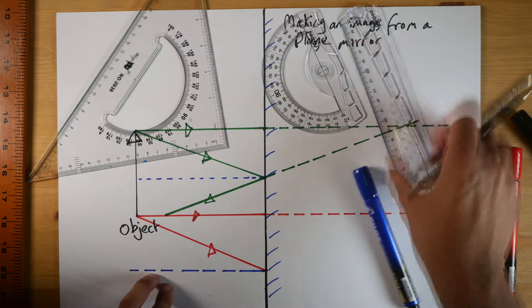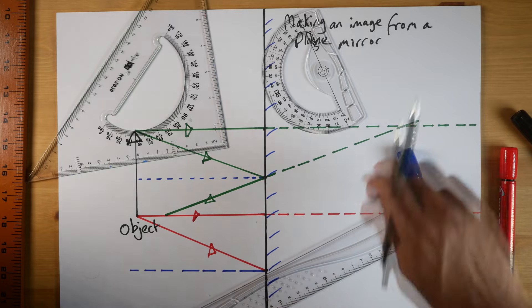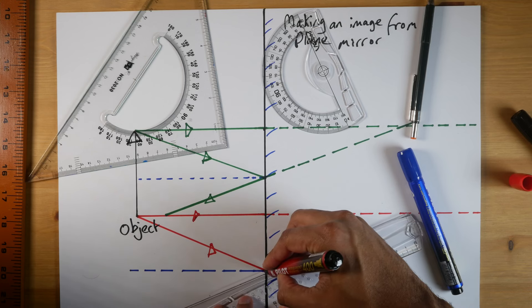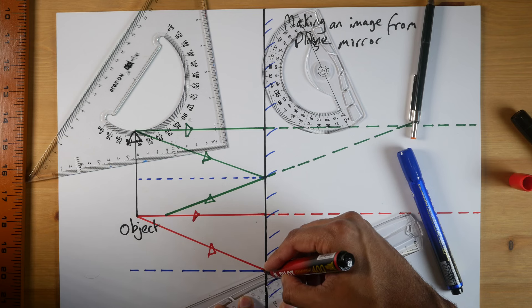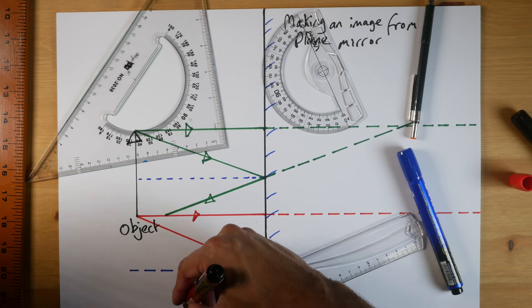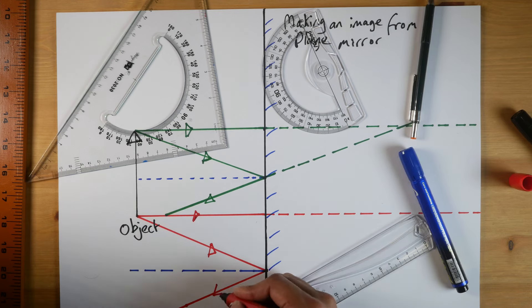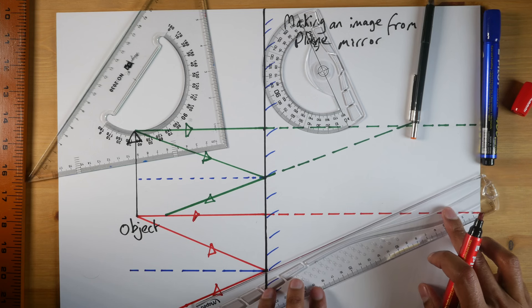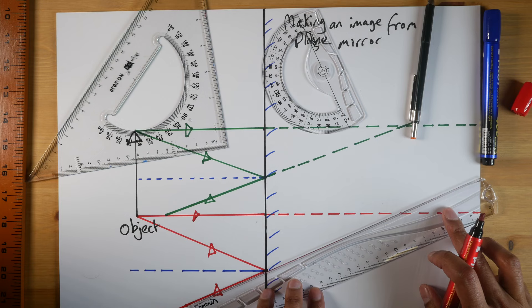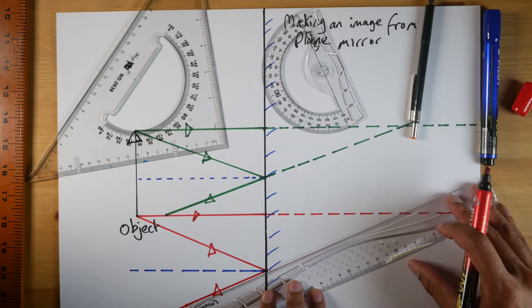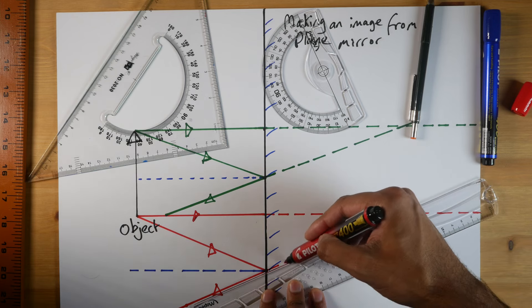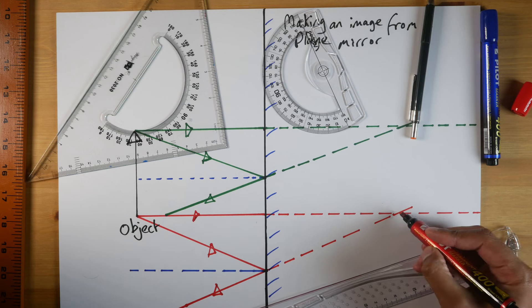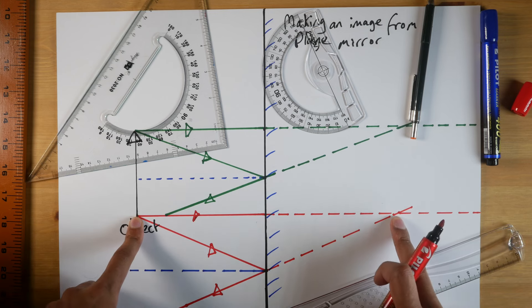And I'm going to use this to make the other line. Kind of running out of paper here, but it is what it is. As accurate as I can. Yeah, we hit it. Cool. Like this. And just like before, what we've got to do is we've got to extend this line backwards. And where the two lines meet, which is just here, that's where that part of the image is formed behind the mirror.